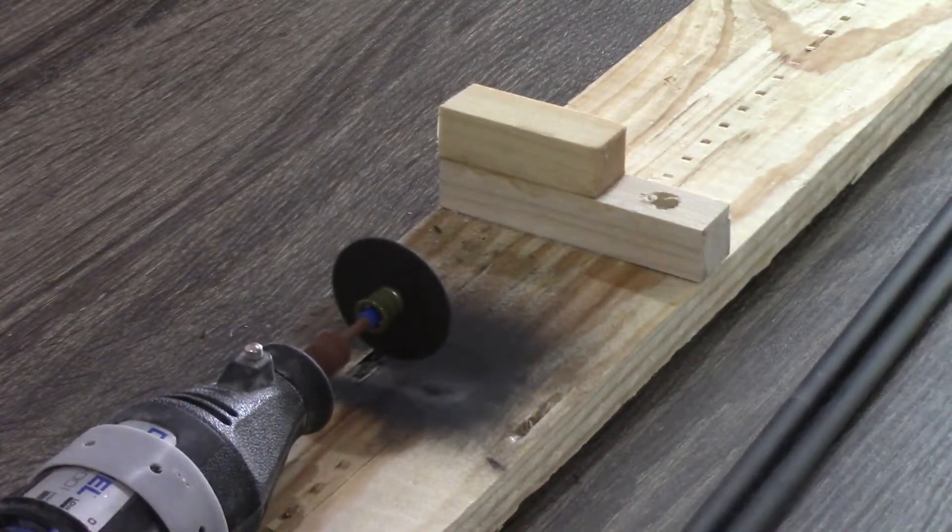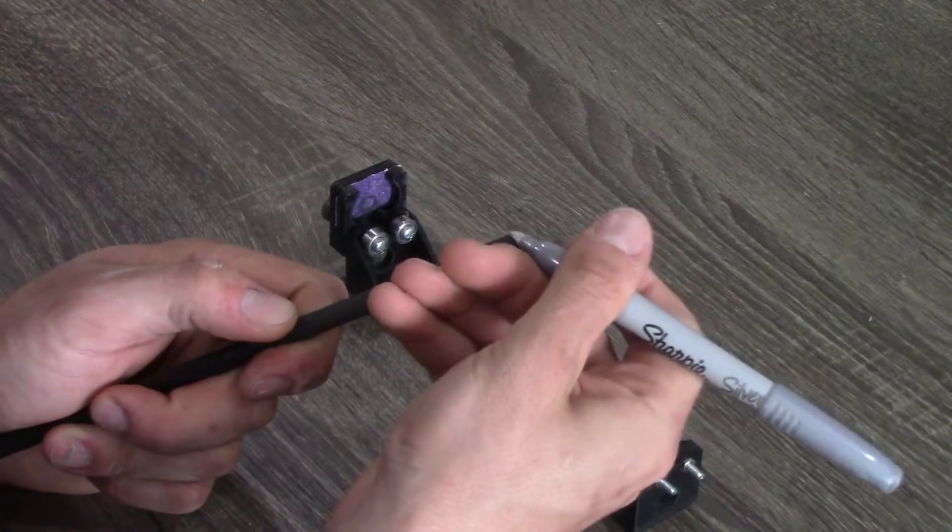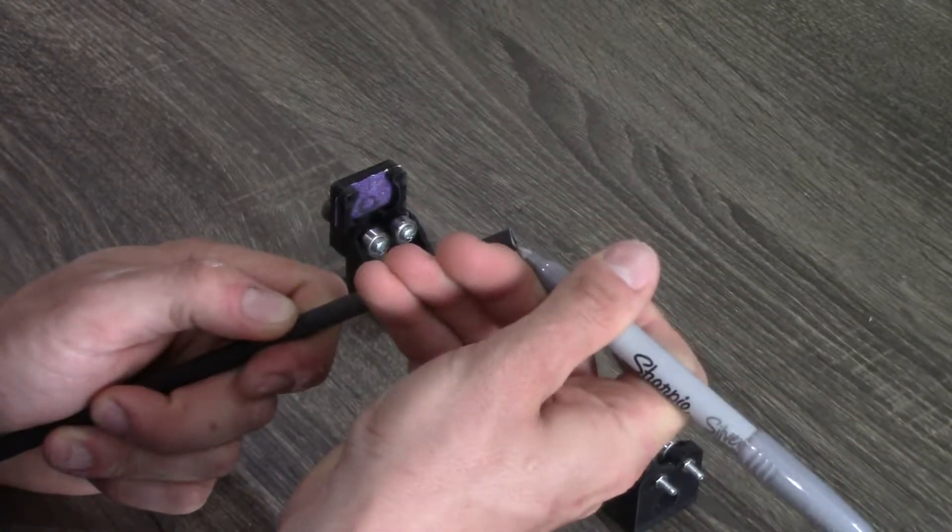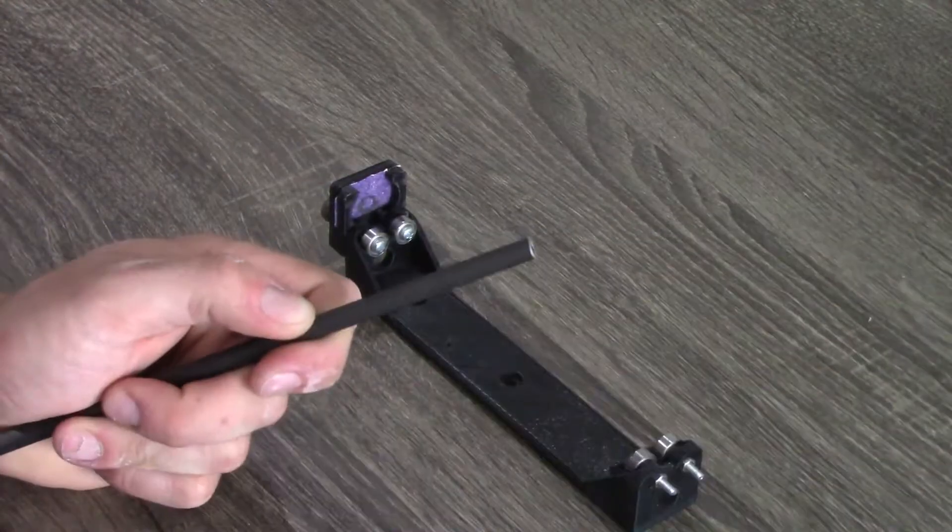After I cut all four of the shafts, I'm going to be squaring the ends of them on my arrow squaring device. To do that, I'm going to take a silver sharpie and mark the end of the shaft. This is going to let me know when I've sanded down the entire end of the shaft, there will be no more silver sharpie, telling me that the end is square.